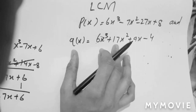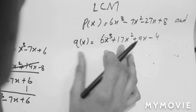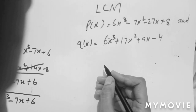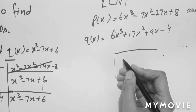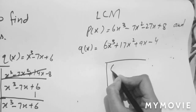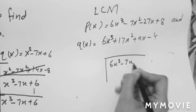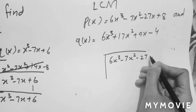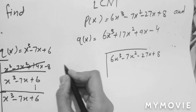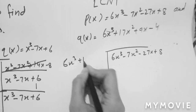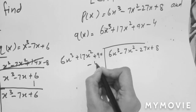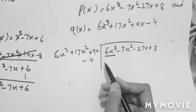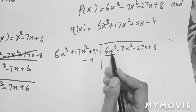We have done HCF before. Now we will do LCM. For LCM we do the same division method as we did for HCF. The two polynomials are: 6x³ - 7x² - 27x + 8 on the inner side, and 6x³ + 17x² + 9x - 4 on the outer side. In the front side, the first number will be made from the first number of the q polynomial.